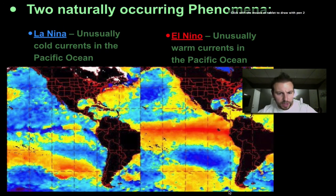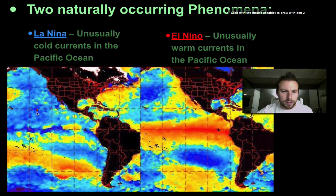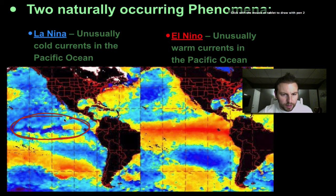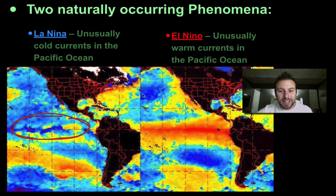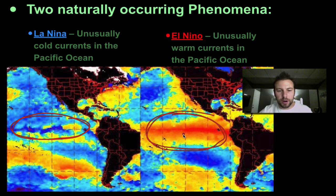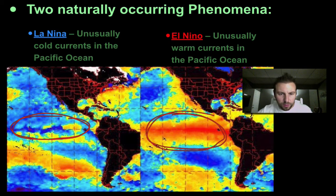Here we have two diagrams showing sea surface temperatures with the United States visible. In La Niña conditions there are usually cold currents in the Pacific Ocean. The area we're concerned with is right around the equator, and you can see by the darker blues and purples that those are colder ocean temperatures off the west coast of South America. During an El Niño condition, the exact opposite — we see warm sea surface temperatures right off the west coast of South America. These two conditions lead to different or unusual ocean currents within the Pacific Ocean.